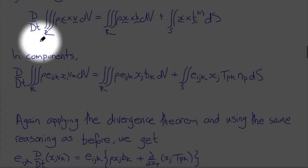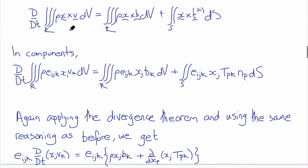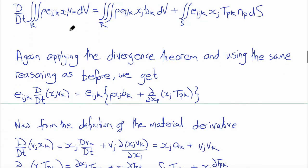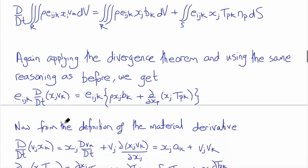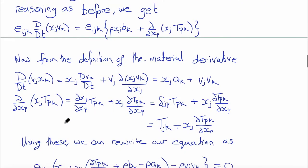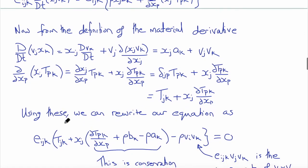And you'll see I did the same thing down here where here we had the material time derivative of rho times x crossed with v, so another vector in this case, and again ended up putting that material time derivative inside the integral and not applying it to rho.